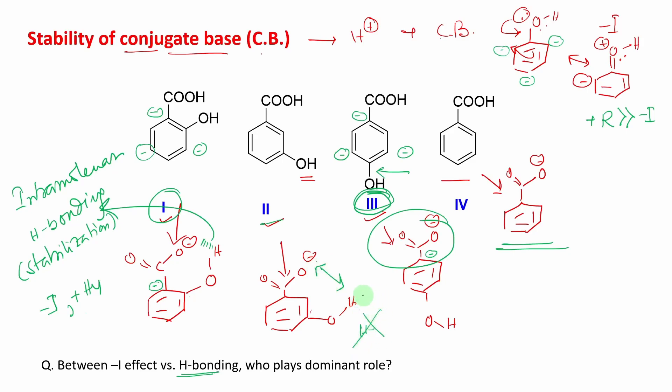But still, if you look at the resonance, negative charge density is here, here, and here, so it is not that much responsible for destabilizing the conjugate base. So okay, it's good. And second thing, at the three position, minus I is very weak but still you can expect a little bit. So it is actually the second in the rank.